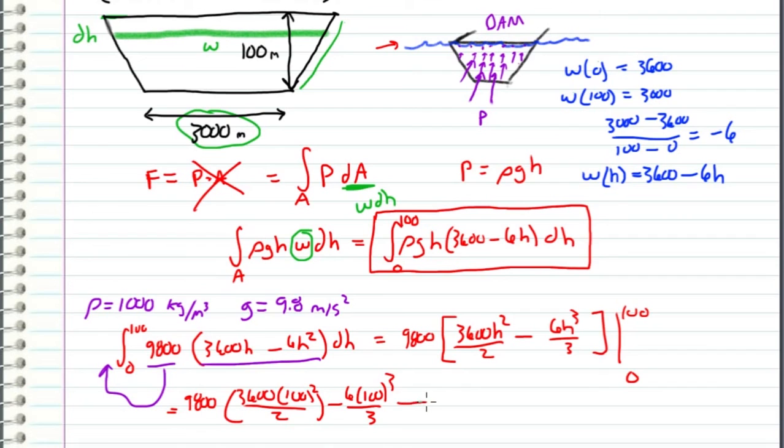When we plug in 0, we get 0. So this comes out to be 1.6 × 10¹¹ newtons.